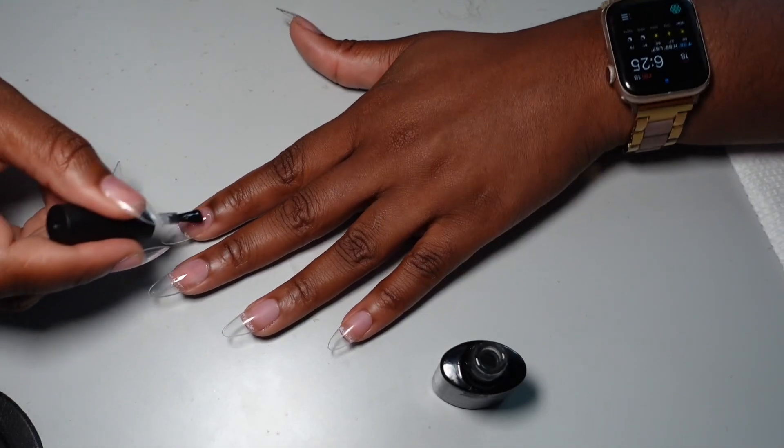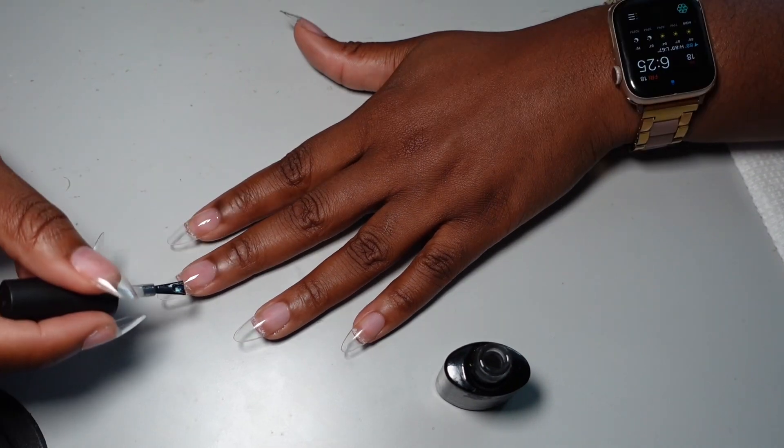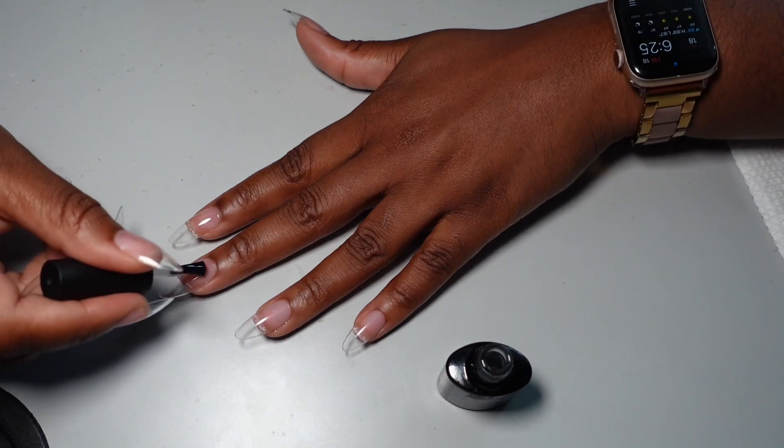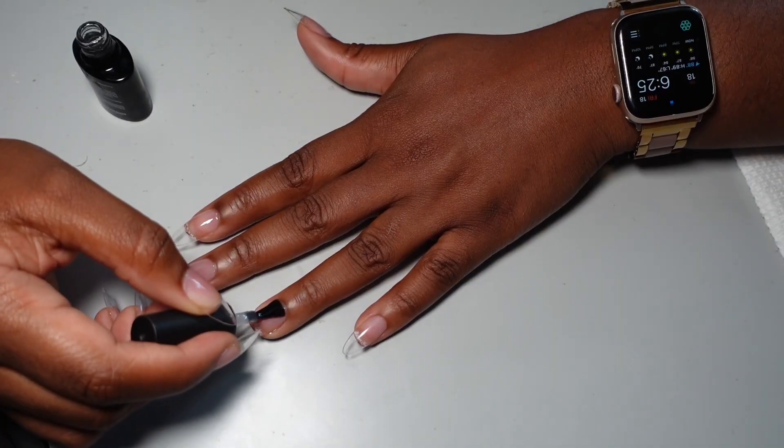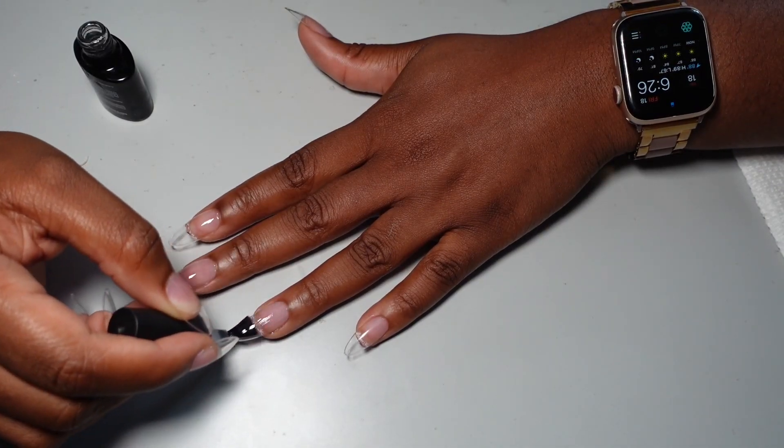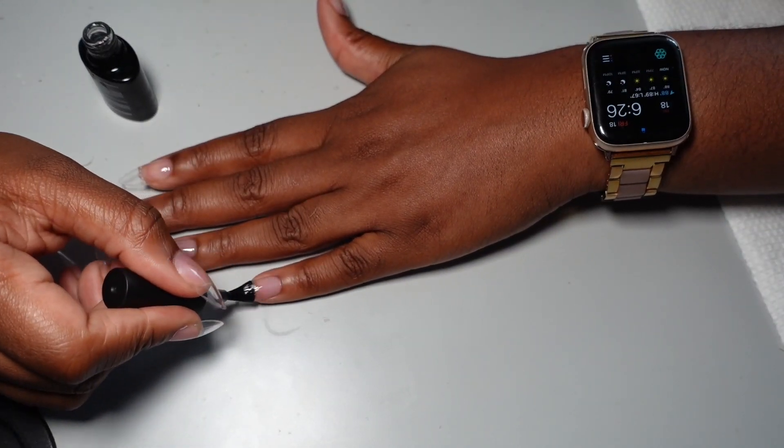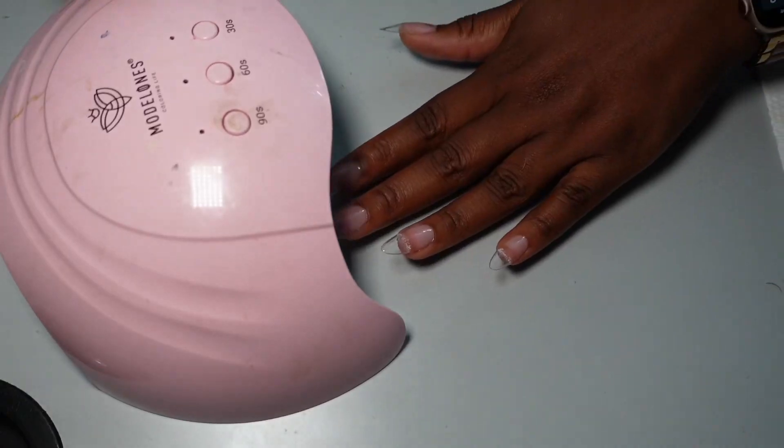And then you're going to put your nails under the light for about 90 seconds. So this is just me applying the coat to every single last nail. I didn't really need to show this part, but you know, trying to make the video be at least a little bit longer.